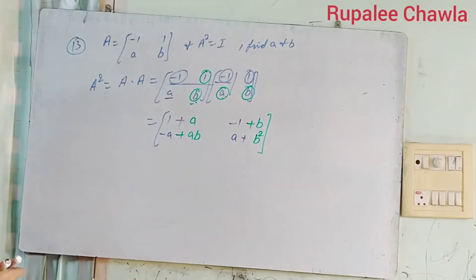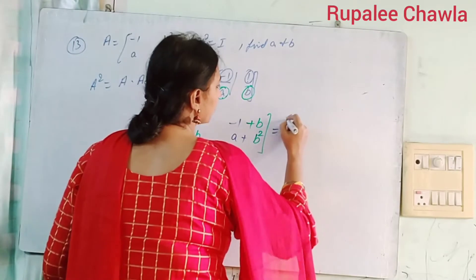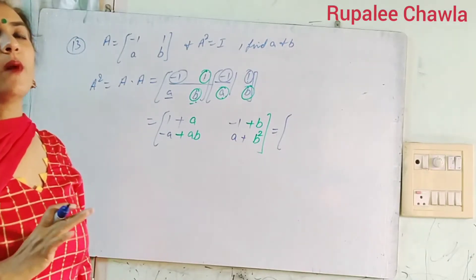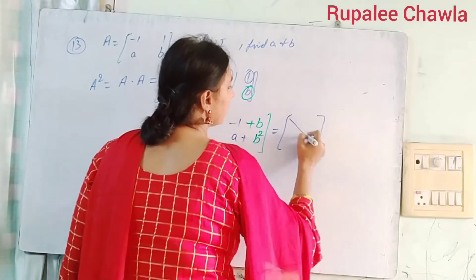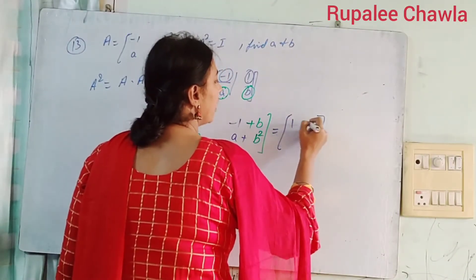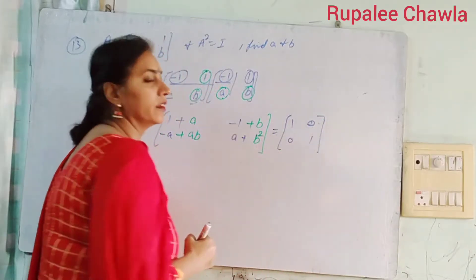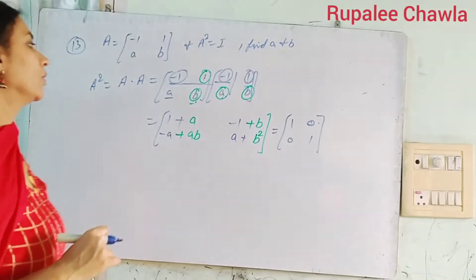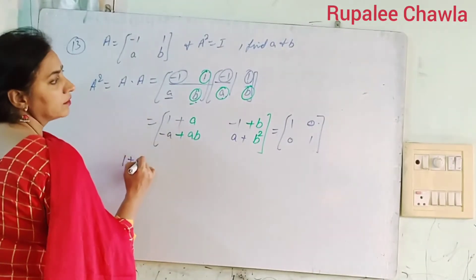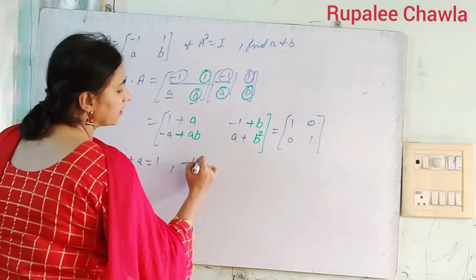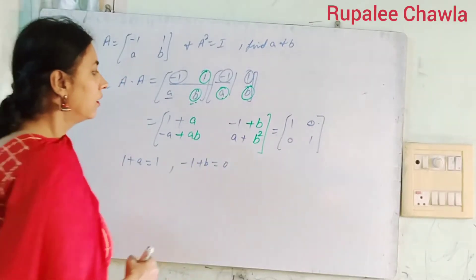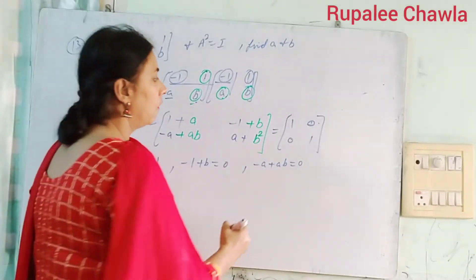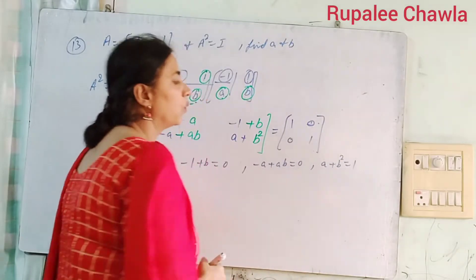यह आए आपके पास। A square आपको given क्या दिया हुआ है — A square is equal to I. I क्या होता है बेटा — identity matrix. Identity matrix वो होती है जिसके diagonal elements 1 होते हैं और बाकी सब 0 होते हैं। Diagonal मतलब ये वाले elements. So identity matrix: 1, 0, 0, 1. Remember it — I का मतलब identity matrix, diagonal elements 1, बाकी सब 0. अब compare करें: 1 plus A किसके equal आगया — 1 के equal. minus 1 plus B किसके equal आगया — 0 के equal.